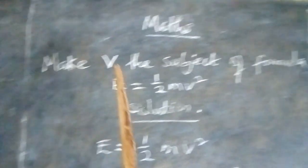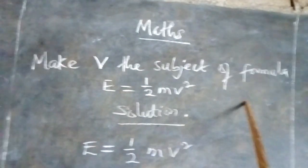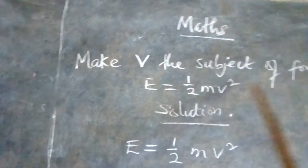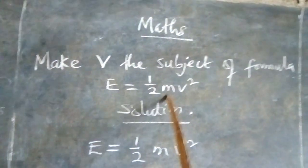Make V the subject of the formula. E equals 1 over 2 mv squared.